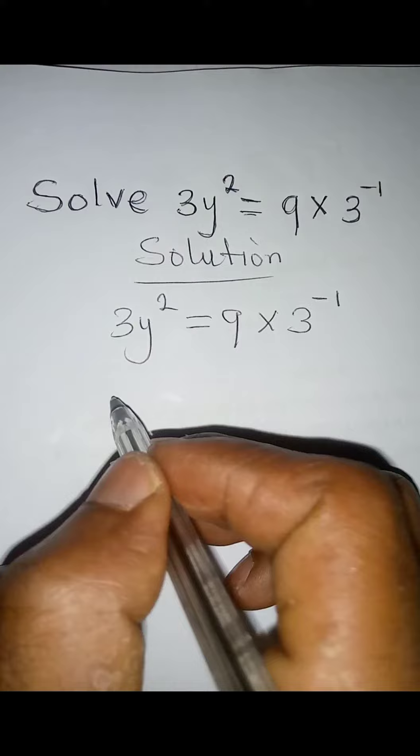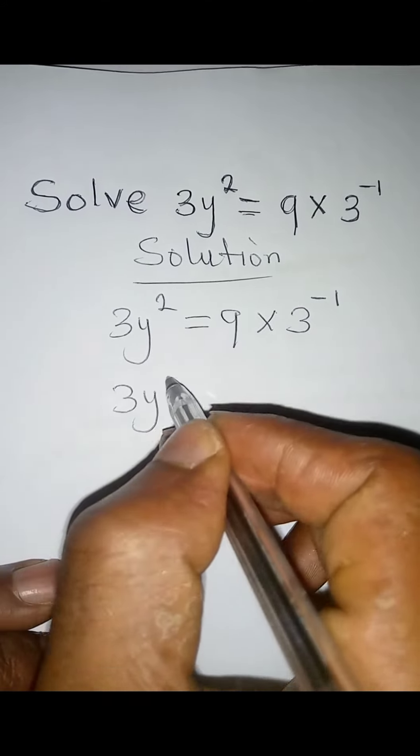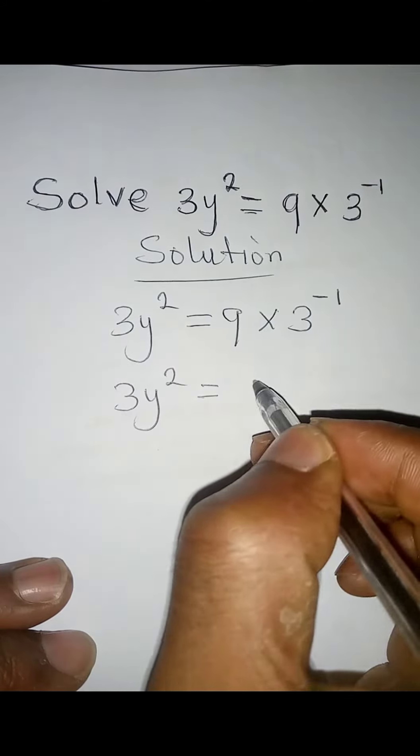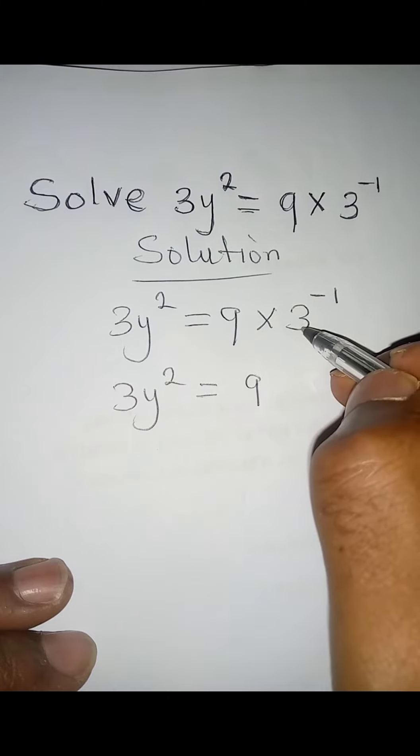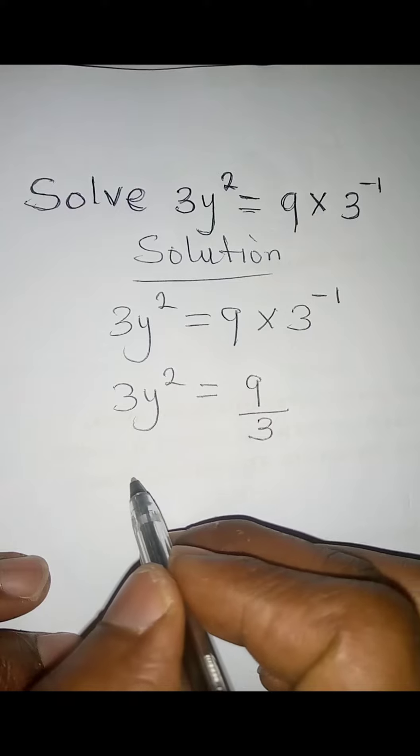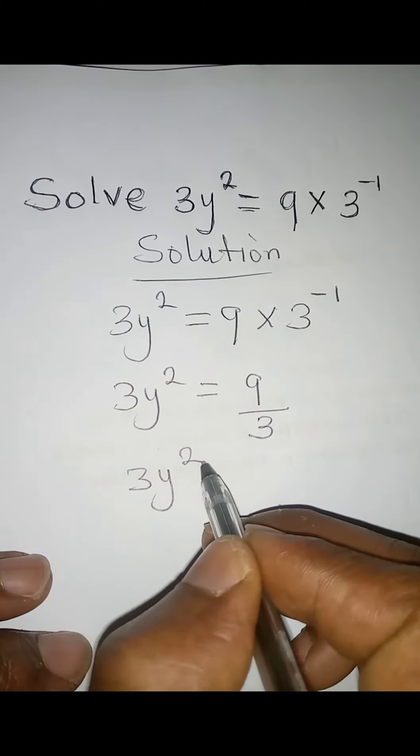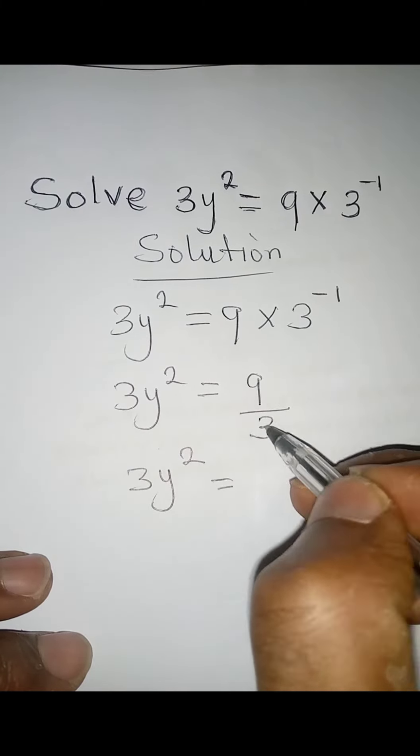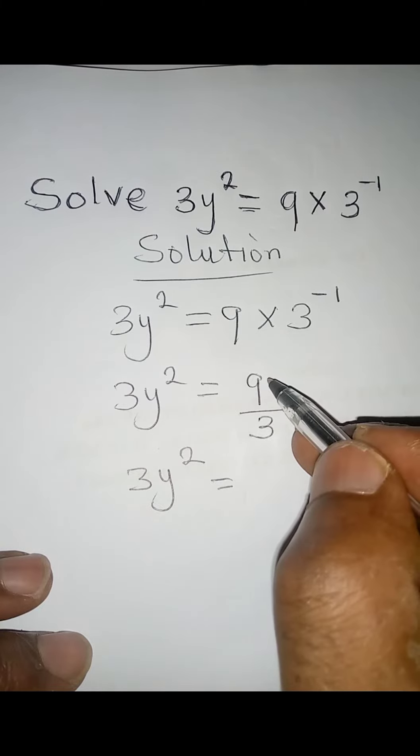This is the same as 3y² = 9 × 3⁻¹. Because we have 3 to the power of negative 1, we can divide by 3. So 3y² equals 9 over 3, and that is 3.